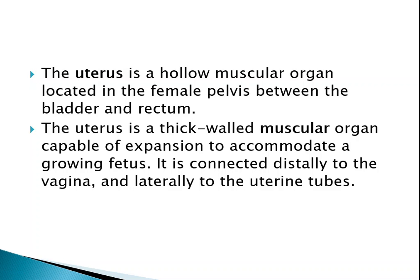The uterus is capable of expansion to accommodate a growing fetus. A mature fetus weighs approximately 2.5 to 3 kg, so the uterus must carry the fetus, placenta, amniotic fluid, and cord. Inferiorly, it is connected to the vagina, and laterally, the uterine tubes — the fallopian tubes — are connected on both sides.